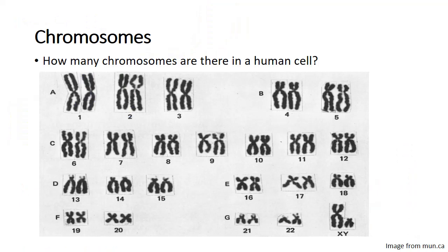When I teach mitosis I usually ask students at the beginning of the class: how many chromosomes are there in the human cell? Often students will say 23 chromosomes, or some would say 46. The correct answer is that there are 46 chromosomes in the human cell.